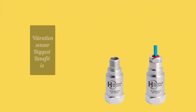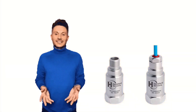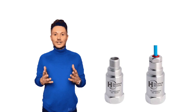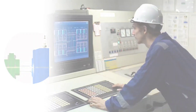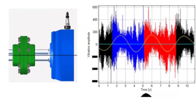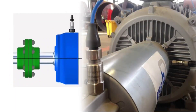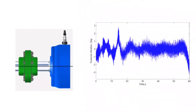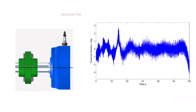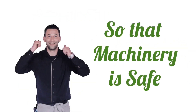The biggest advantage of vibration sensors is their accuracy. These sensors measure vibrations with such accuracy that operators can detect even the smallest vibration changes. The higher the vibrations, the more harmful they will be for the machine. Keeping this in mind, at a high vibration level, machinery is set to automatic trip or stop, so that the machine remains safe.